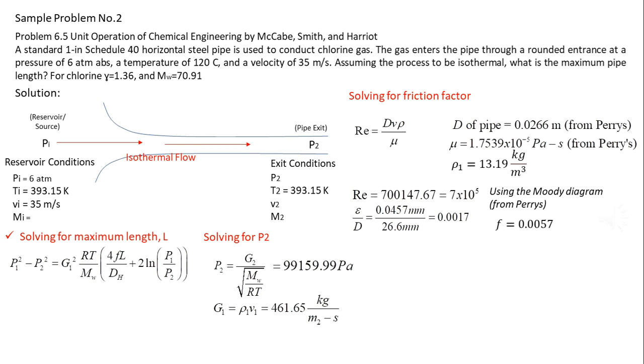Solving for friction factor using the Moody Diagram from Perry's, we have f equals 0.0057. Substitution of all variables into the equation for Lmax, and calculating, we have Lmax equals to 38.49 meters.